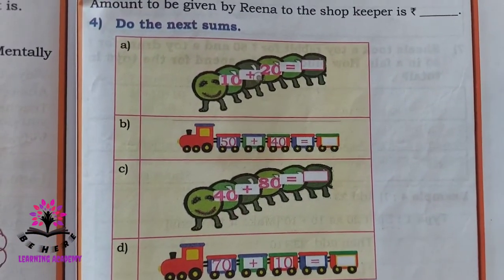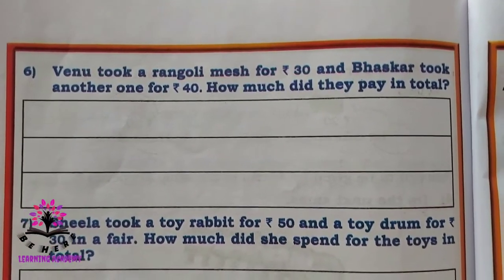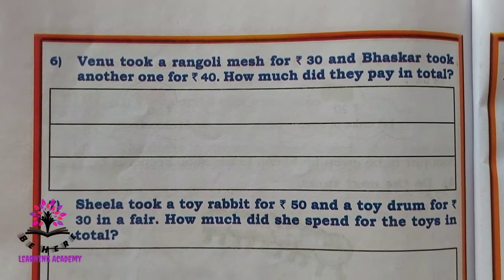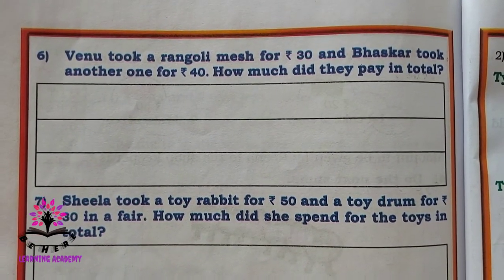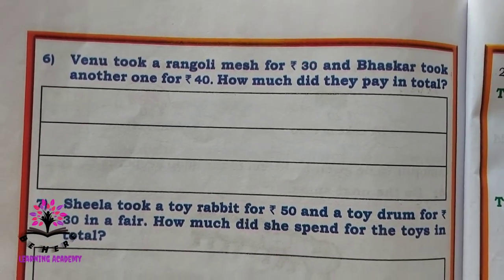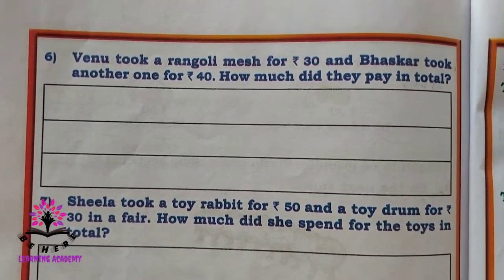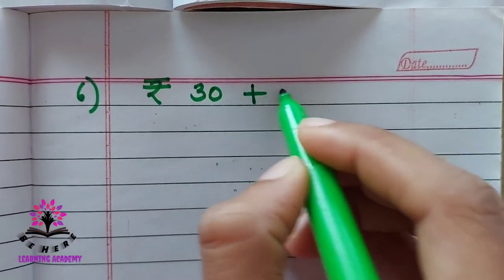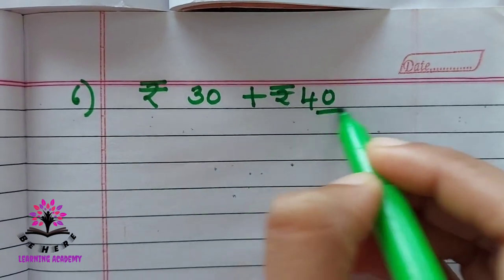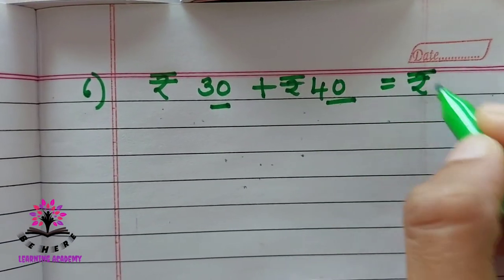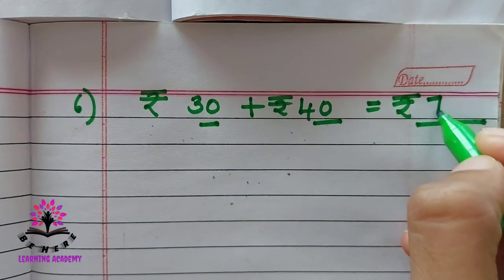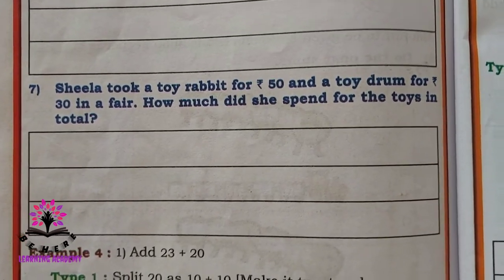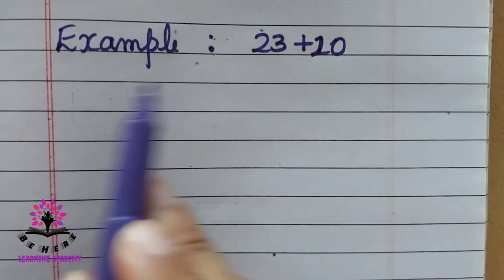Do the next sums — calculate mentally: 10 plus 20 and three other similar sums. Venu took a rangoli mesh for rupees 30 and Baskar took another one for rupees 40. How much did they pay in total? 30 plus 40 — both have 0 in the unit place, so add the tens digits: 3 plus 4 is 7, giving 70. The answer is rupees 70.